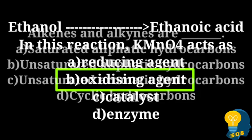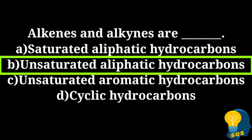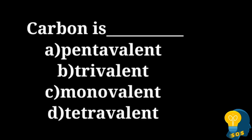The next question is: alkenes and alkynes are — option A: saturated aliphatic hydrocarbons, option B: unsaturated aliphatic hydrocarbons, option C: unsaturated aromatic hydrocarbons, option D: cyclic hydrocarbons. The correct answer is option B, unsaturated aliphatic hydrocarbons, because alkenes and alkynes are first of all unsaturated, and both belong to aliphatic hydrocarbons. An example of aromatic hydrocarbon is benzene.